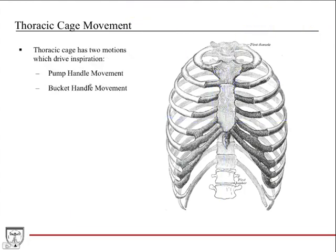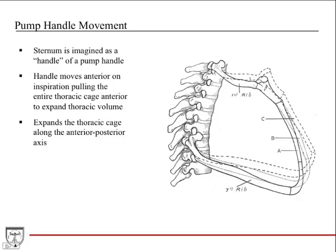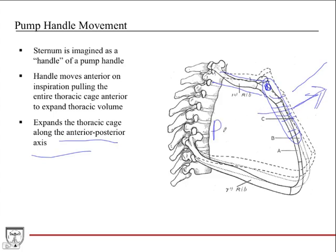The thoracic cage has two motions that drive inspiration, outside of diaphragm movement. The pump handle movement is where the sternum acts as the handle of a pump. During inspiration, the sternum is pulled anteriorly, expanding the thoracic cage along the anterior-posterior axis. Think of it as reaching out and pulling the sternum forward, which increases the cage volume in that AP direction.